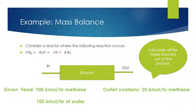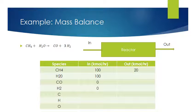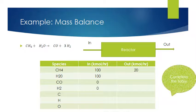The way I normally like to present the results is in a table. I set up a table with the species in a column on the left-hand side: methane, water, CO, hydrogen, and also the atoms — carbon, hydrogen, and oxygen. We have 100 kilomoles per hour of methane flowing in, 100 kilomoles per hour of water flowing in, and no CO or hydrogen flowing in. Coming out, I've got 20 kilomoles per hour of methane. Calculate all the other values in the table.